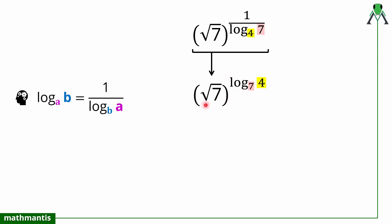Now, why did I apply this property? The second property of logarithm is a very important one for solving logarithmic expressions: when the exponent contains a log expression, we can simplify using this property. Looking at this problem, I noticed the logarithmic expression in the exponent. The base here is 7, and the logarithmic base value is also 7.